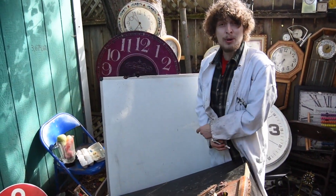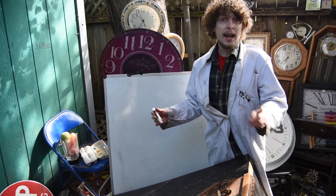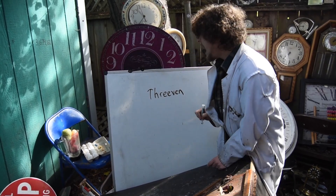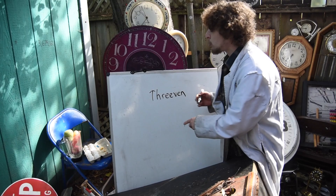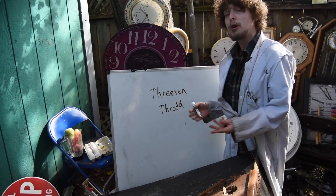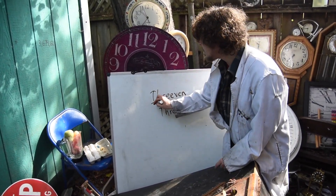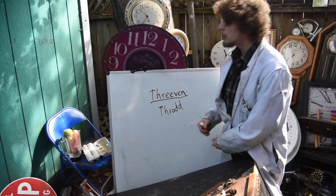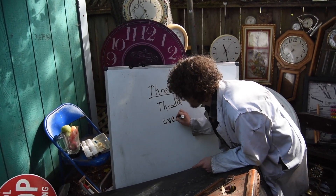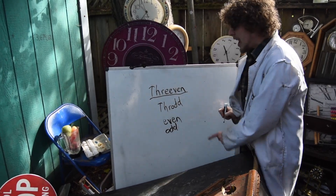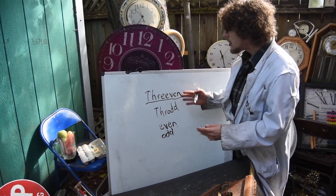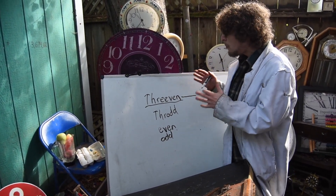Hey folks, welcome back to Combo Class. I'm your teacher Domotro, and today I need to teach you why the word 'threvan' needs to be in the dictionary. A threvan amount is something that is not throd — in other words, a multiple of three, or mathematically, something congruent to zero in mod three. Even just means a multiple of two, and odd means something that isn't, and they get nicknames — so why doesn't threvan?